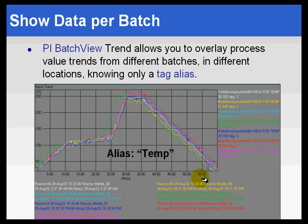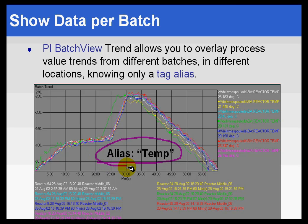On a batch trend, there are nice ways of comparing the current production run to what we call the golden batch — the batch that represents the best product we ever made — overlaid on top of the current value. This can span different units: if you have an alias called 'temp' that exists in reactor one, reactor two, and reactor three, we can overlay them all on top of each other. You can also produce a spreadsheet report that gathers and presents that same type of information.